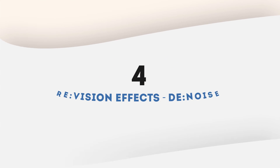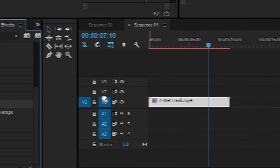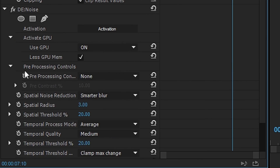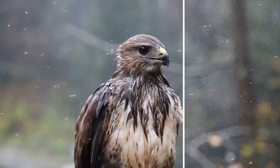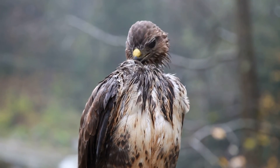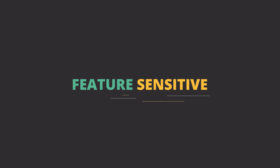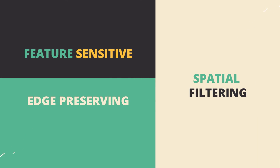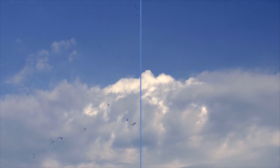Number 4: RE Vision Effects Denoise. Denoise is a video noise reduction plugin for Premiere Pro that can handle spurious frame-to-frame defects such as fine digital noise and blotchy spots like film dirt. It uses feature-sensitive, edge-preserving spatial filtering methods to remove noise, grain, fingerprints, and dust on film, and many other visual defects.